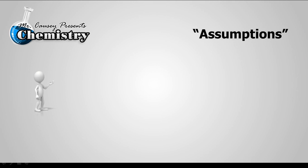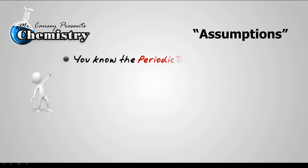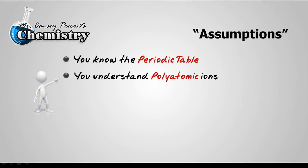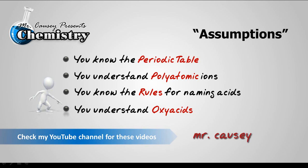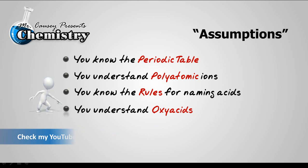First I'm going to make some assumptions. I'm going to assume that you know the periodic table, that you're familiar with atomic ions or polyatomic ions, that you know the rules for naming acids, and that you understand oxy acids. If you don't understand all of these ideas, you can go to my YouTube channel and type in Mr. Kazi and periodic table, or Mr. Kazi and polyatomic ions, and you'll find the lessons you need to understand how to name acids.